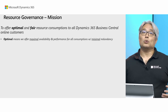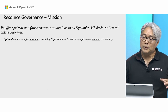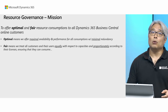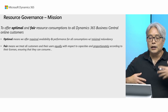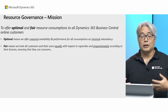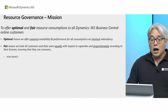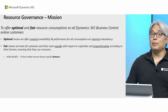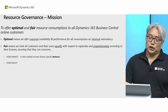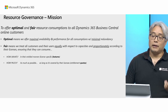Optimal means we want to offer maximal availability and performance for all resource consumption with minimal redundancy and minimal idle resources. Fair means we want to treat all customers and their users equally with respect to capacity, and at the same time, proportionally with respect to the licenses. We want to ensure that all our customers and their users can consume how and what they are entitled to consume — which is the license-specific features — and how much they can consume as long as it is covered by their licenses.